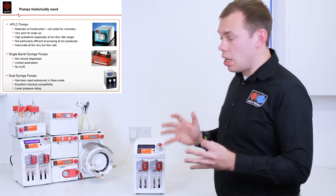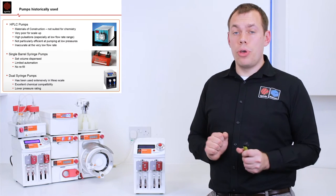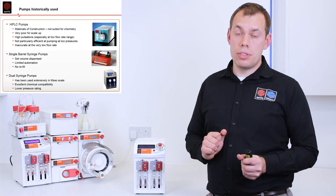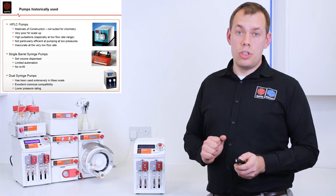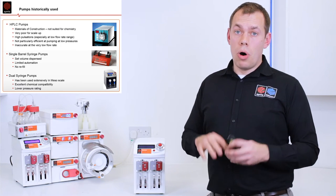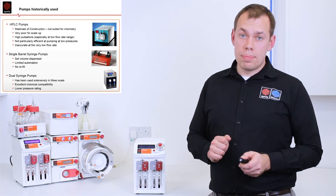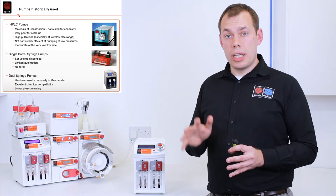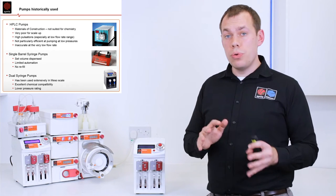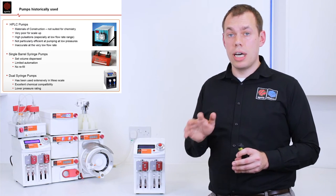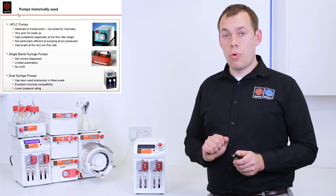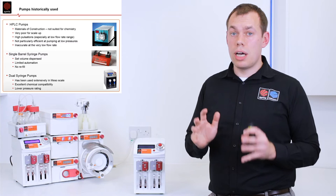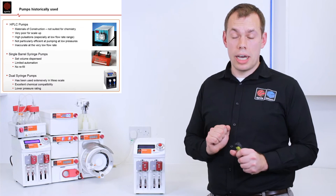Historically, people who were starting with flow chemistry were using three types of pumps. HPLC pumps, single barrel syringe pumps and dual syringe pumps. All those pumps have drawbacks. HPLC pumps are mainly designed for operating at high flow rate and high pressure. And therefore they lose a lot of their precision and accuracy at lower pressures and lower flow rates. Also the material of construction is mainly metal so they are not as highly chemically resistant as you would like.